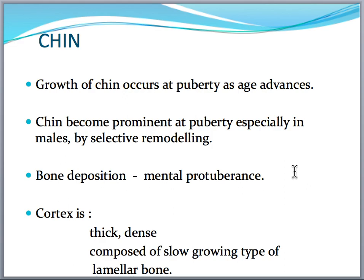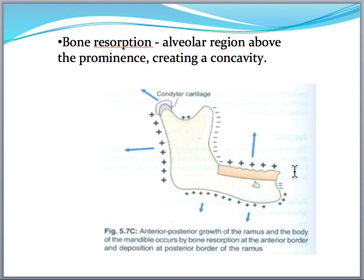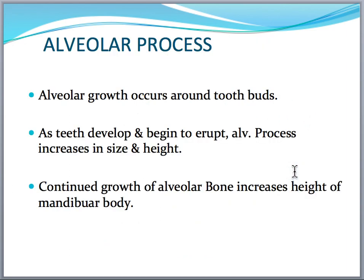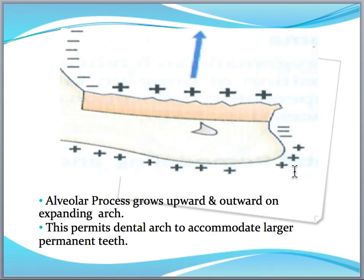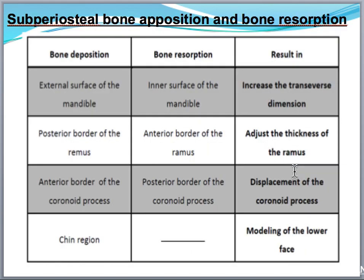Regarding remodeling of the chin, it also develops only after puberty age — explain how bone deposition takes place and the full bone remodeling of the chin. Next, as the alveolar process emerges with teeth, remodeling also takes place there. A table should be included in your answer explaining each surface where bone deposition and resorption takes place, resulting in changes in the transverse, anteroposterior, or vertical dimension.